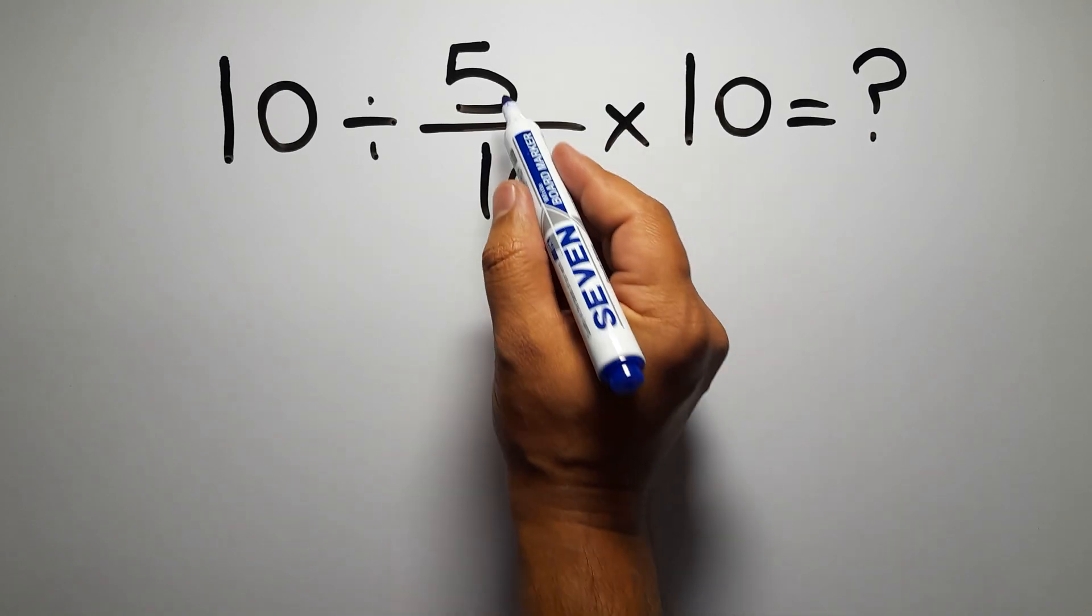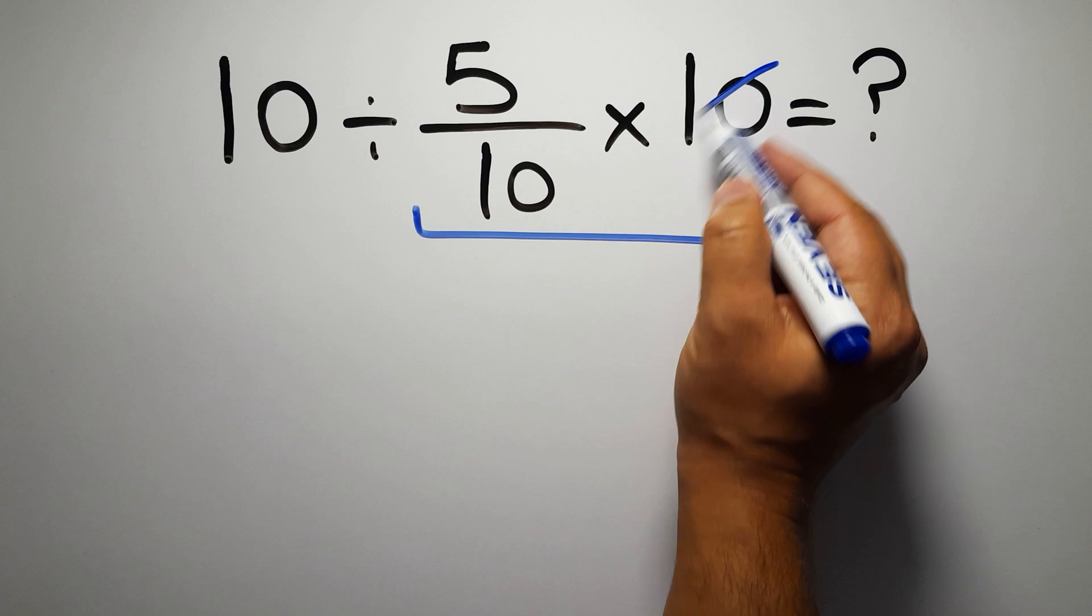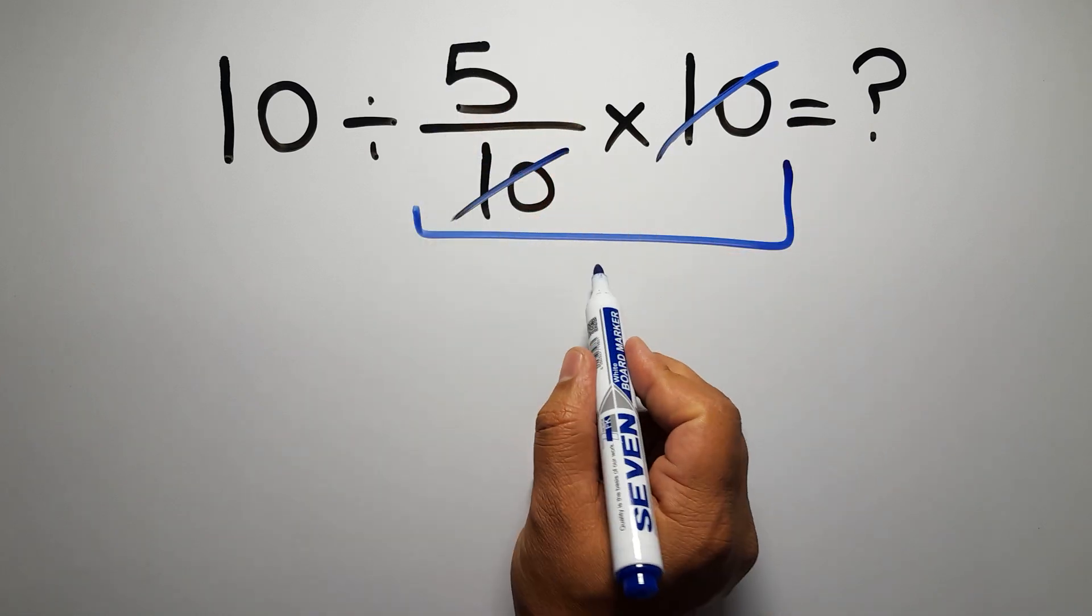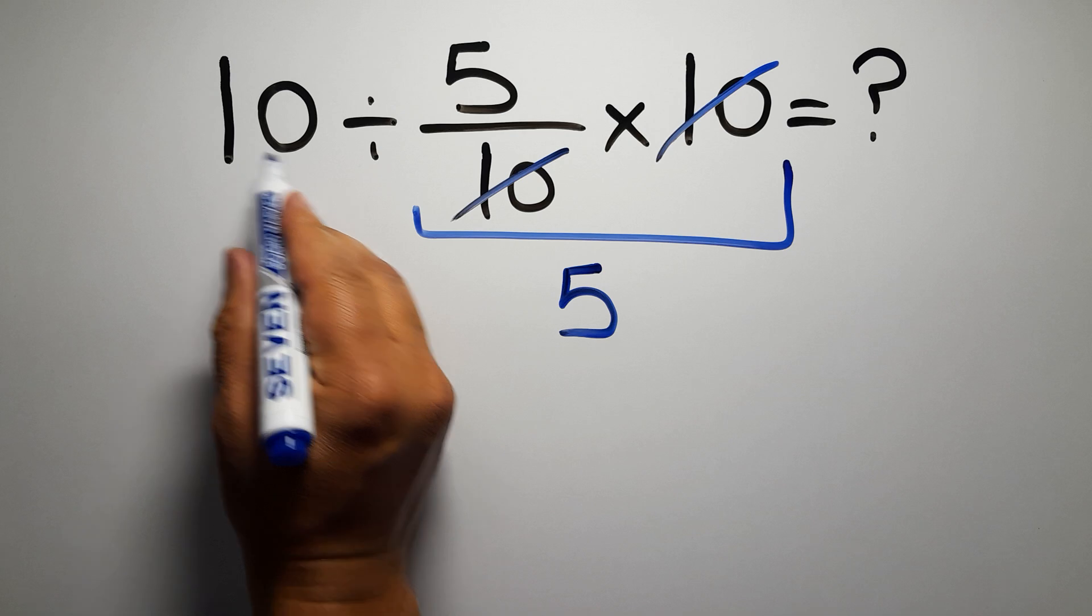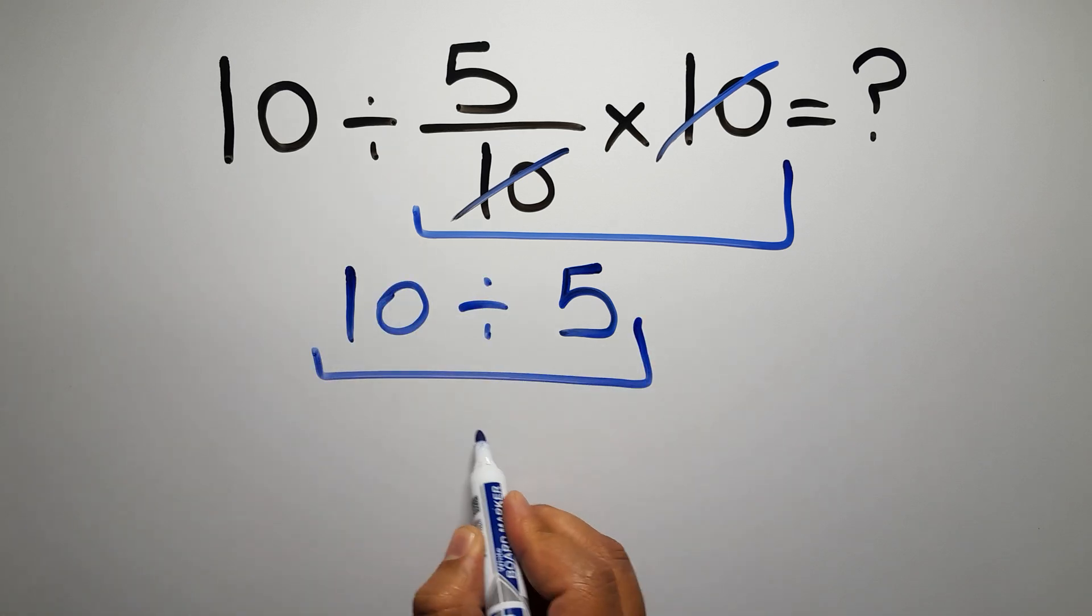First, we do this multiplication, 5 over 10 times 10. We can easily cancel this 10 and this 10, so here we have just 5. And 10 divided by 5 gives us 2.